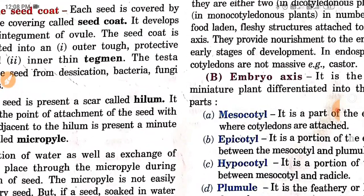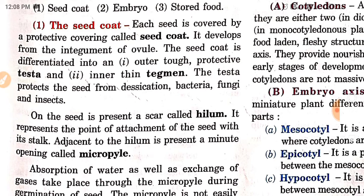First, the seed coat. Each seed is covered by a protective covering called the seed coat. It develops from the integument of the ovule. The seed coat is differentiated into an outer tough protective testa and an inner thin tegmen. The testa protects the seed from desiccation, bacteria, fungi, and insects.